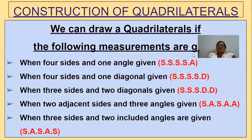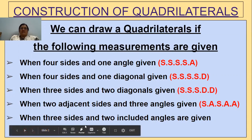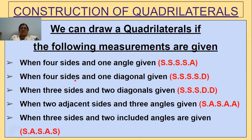To construct a quadrilateral, we need certain measurements. The first case: we need 4 sides and 1 angle. The second case: if 4 sides and 1 diagonal are given, then also we can construct a quadrilateral. And if 3 sides and 2 diagonals are given, that also works.